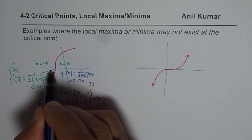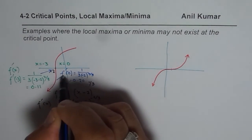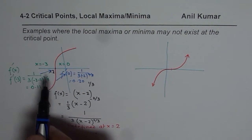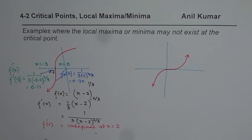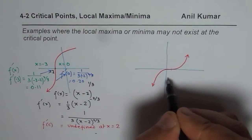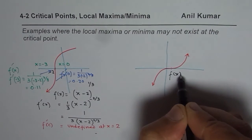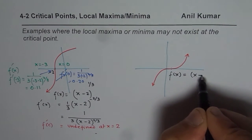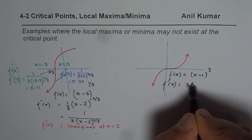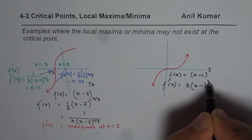So the derivative is positive on the left side and also positive on the right side. Since it is not changing from positive to negative or negative to positive, we do not have a local maximum or minimum in this particular case. Similarly, we can do this for the cubic function. Let us take f(x) = (x - 1)^3. Then the derivative of this function will be 3(x - 1)^2.